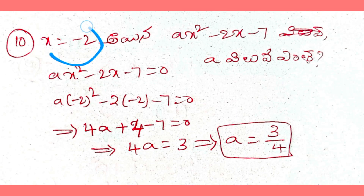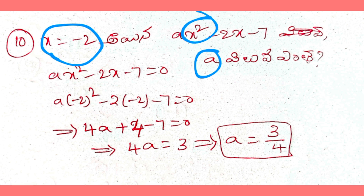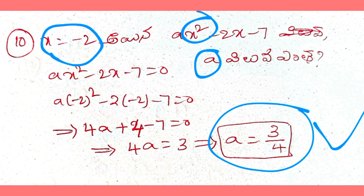Next, x equals minus 2 is substituted into x square minus 2x minus 7. Substituting x equals minus 2, we evaluate step by step to find the true value. After completing the steps, we can find out the final value.